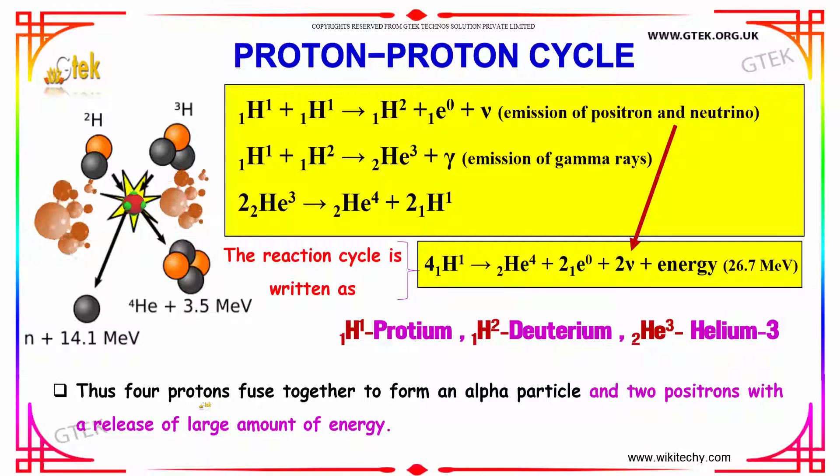Thus, four protons fuse together to form an alpha particle and two positrons with a release of large amount of energy. This is referred to as a proton-proton cycle.